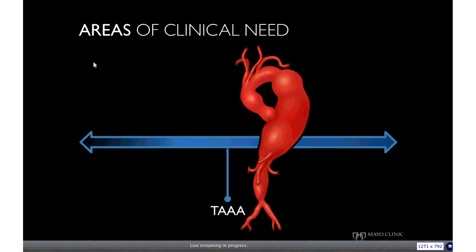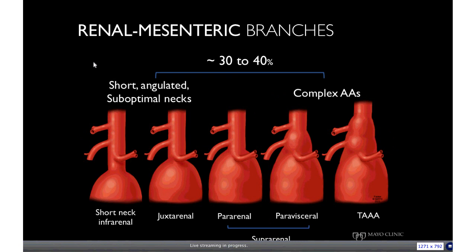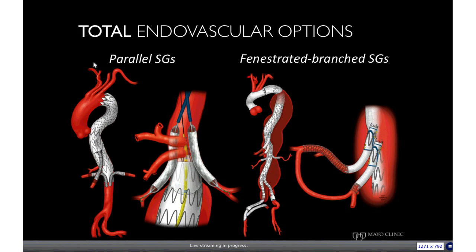That accounts for 30% to 40% of the patients we see in our practice, including patients with frank aneurysms involving the renal and mesenteric arteries or a short infrarenal aortic neck not well-suited for infrarenal repair. There are several total endovascular alternatives. Perhaps this slide summarizes the two most frequent: parallel stent grafts — also known as chimneys, snorkel, periscope, or sandwich grafts — or specifically designed stents such as fenestrated stents and branched stent grafts.